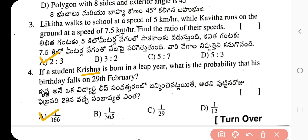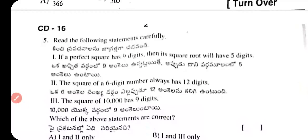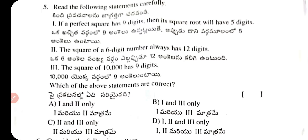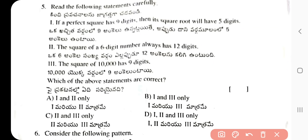Question 5: Read the following statements carefully. Statement 1: A perfect square has nine digits, then its square root will have five digits. Statement 2: The square of a six-digit number always has 12 digits. Statement 3: The square of 10,000 has nine digits. The correct answer is B — only statements 1 and 3 are correct.